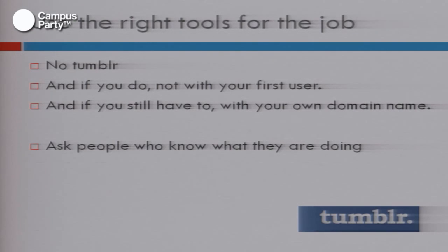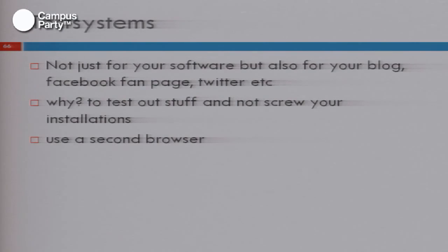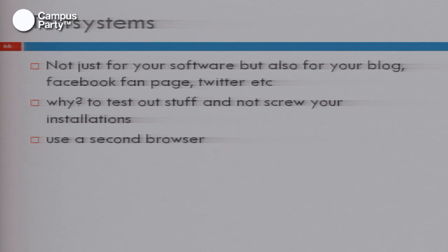What I'm always surprised at, especially around developers, is there's a concept called test systems. That works for Facebook pages, that works for blogs, that works for Twitter accounts. You can set up a specific hidden test page on Facebook, you can have an additional profile on Google+, additional profiles everywhere else. And you use that, for example, to try out new plugins on your WordPress blog, or to try out a new template. And then you move it into production. That is something you really should be looking into.